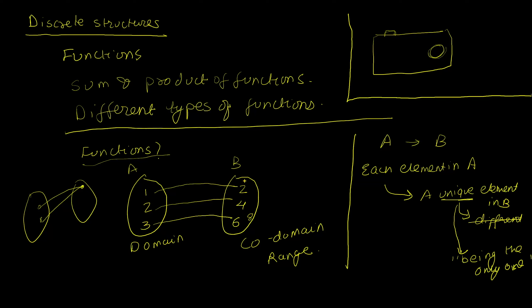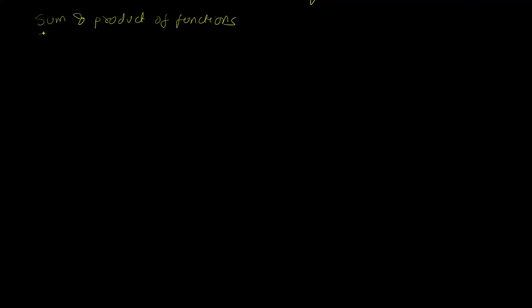The next thing to look at is the sum and product of functions. This is a limited topic in scope because sum and product only make sense in terms of numbers — in sets we'd talk about unions and intersections, and in boolean algebra we'd talk about AND and OR. When we say product of functions, we don't actually mean multiplying the functions themselves; it makes sense to multiply the values of those functions at specific points.